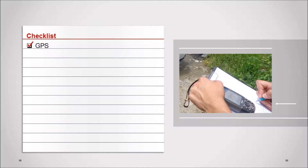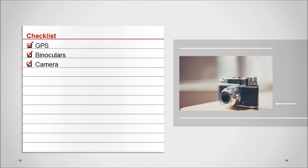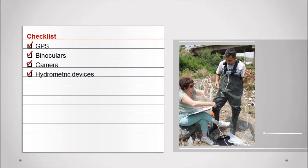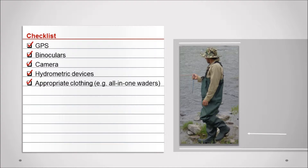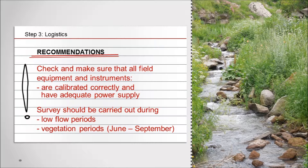Step 3: Logistics. After establishing survey units, sub-survey units, and HAB plots, it is necessary to plan route details, mode of transport, accommodation, and any other logistical arrangements. The following materials should be assembled prior to conducting fieldwork: binoculars, digital camera, hydrometric devices such as an electromagnetic flow meter, acoustic Doppler current profiler (ADCP), and deep water thermometer; appropriate clothing such as all-in-one waders, and a boat if necessary. All field equipment and instruments should be checked beforehand to make sure they are calibrated correctly and have adequate power supply. Surveys should be carried out during low flow periods when the riverbed structure and substrate are visible, and from June to September as several parameters rely on assessing the structure of vegetation.